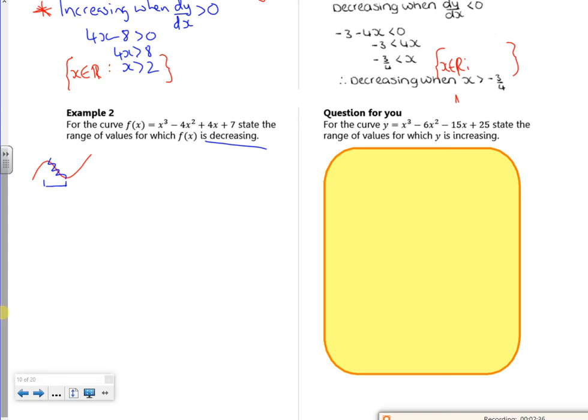So if I differentiate it, f dashed of x is 3x squared minus 8x plus 4. I am decreasing when f dashed of x is less than zero. So we're happy we've got y goes to dy by dx, and f of x goes to f dashed of x. So I've got 3x squared minus 8x plus 4 is less than zero.